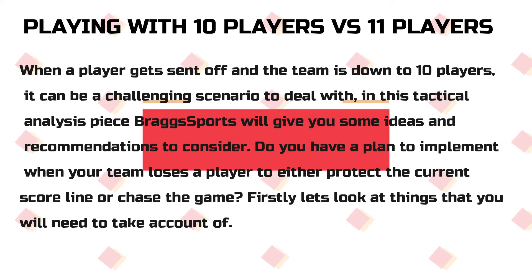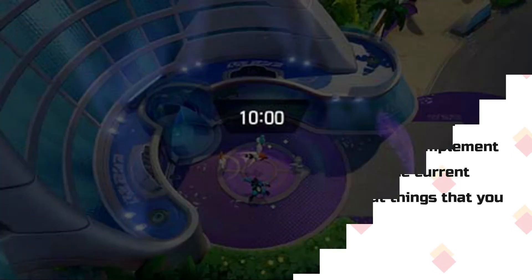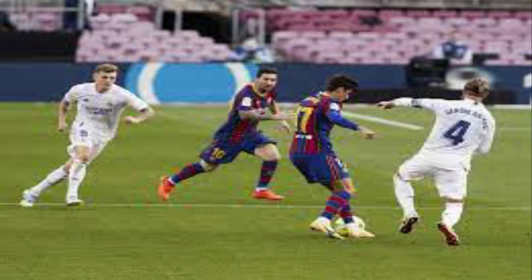Do you have a plan to implement when your team loses a player, to either protect the current scoreline or chase the game? Firstly, let's look at things you will need to take account of. A degree of control needs to be established in the game. How long is left in the match? Decisions on where to attempt to regain the ball — higher or lower — can be influenced by the state of the game or the momentum.